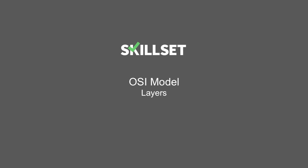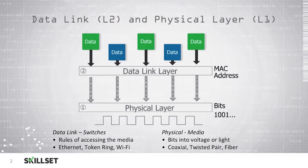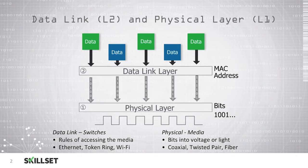Welcome to our OSI model layers module. The data link layer, or layer 2 of the OSI model, receives data from higher layers and prepares it to be transmitted on the physical layer.